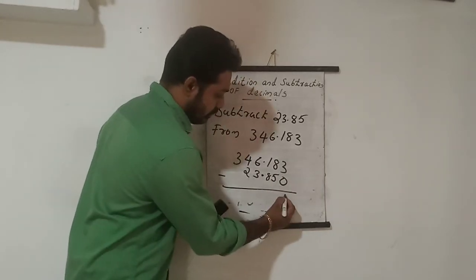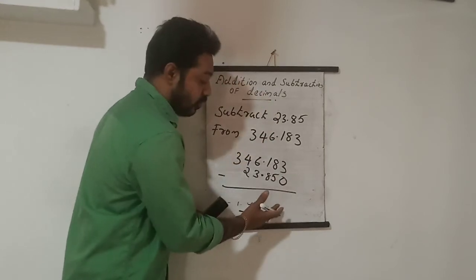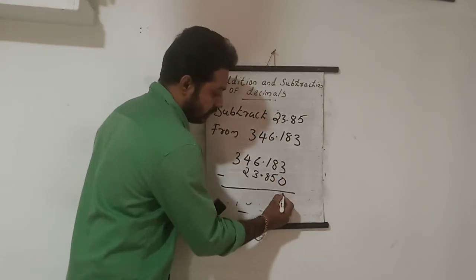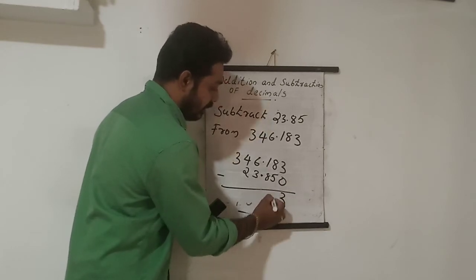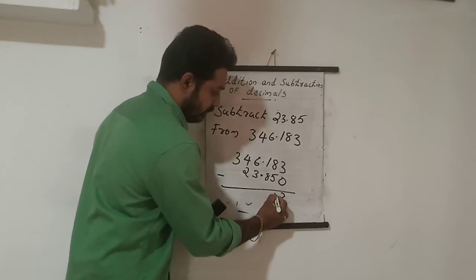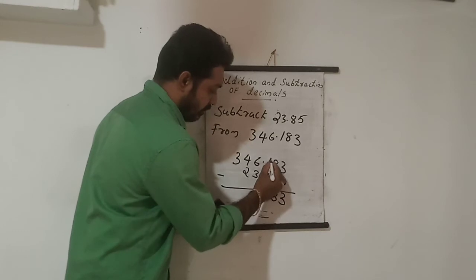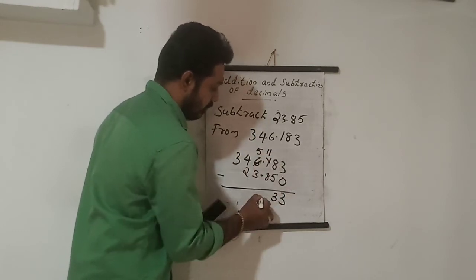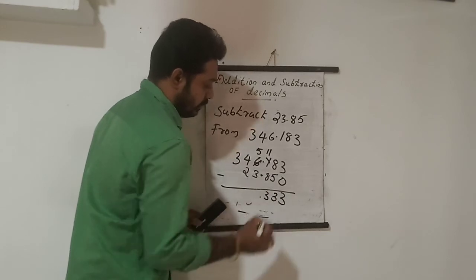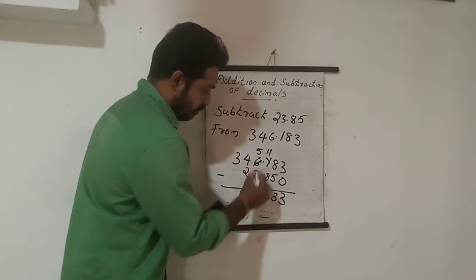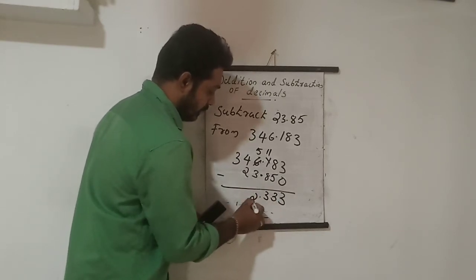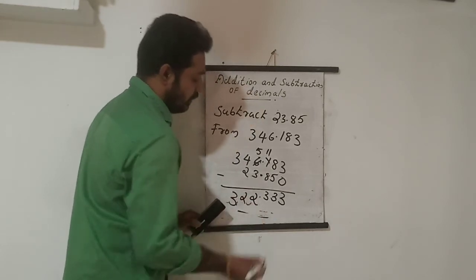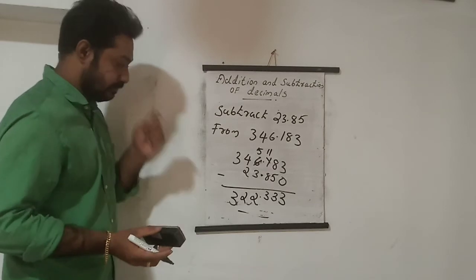So: 3 minus 0 is 3; 8 minus 5 is 3; 1 minus 8 is not possible, so borrow — becomes 11 minus 8 is 3; then borrow again; 5 minus 3 is 2; 4 minus 2 is 2; then 3. So the answer is 322.333.